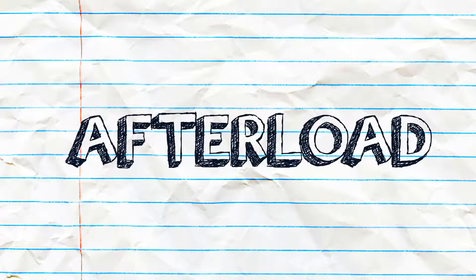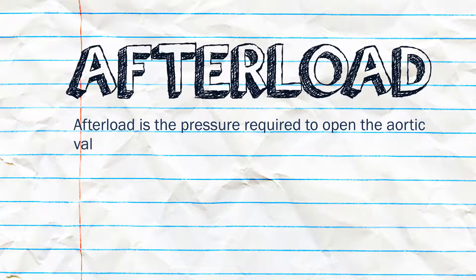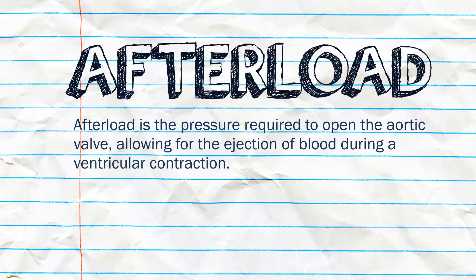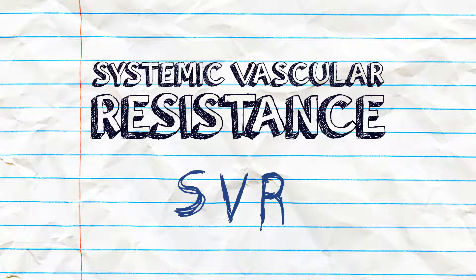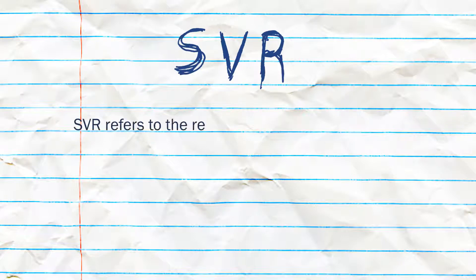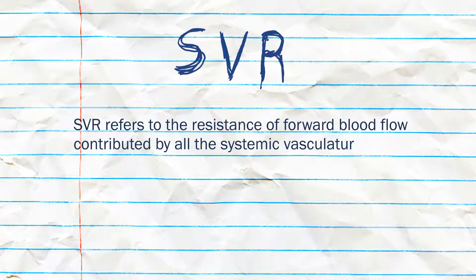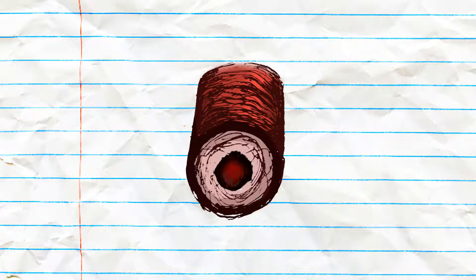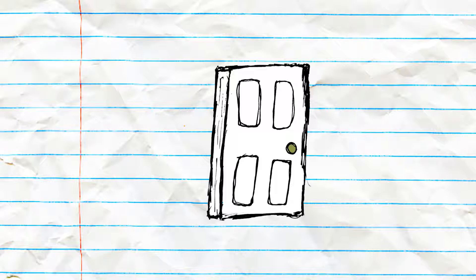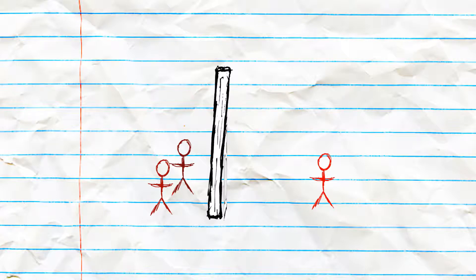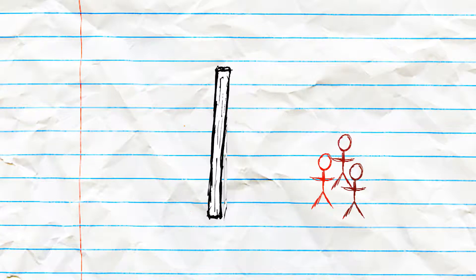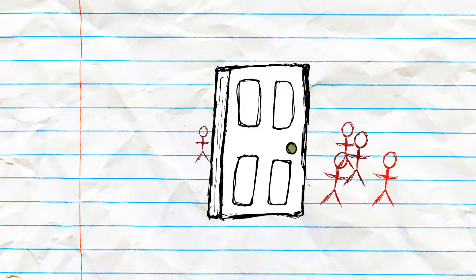Afterload is the pressure required to open the aortic valve, allowing for the ejection of blood flow. Another factor of afterload is systemic vascular resistance, or SVR. SVR refers to the resistance of forward blood flow contributed by all the systemic vasculature, but not including pulmonary vasculature. Any mechanisms that cause vasoconstriction increase SVR, resulting in a decrease in forward flow. Any mechanisms that cause vasodilation decrease SVR, resulting in an increase in forward flow.